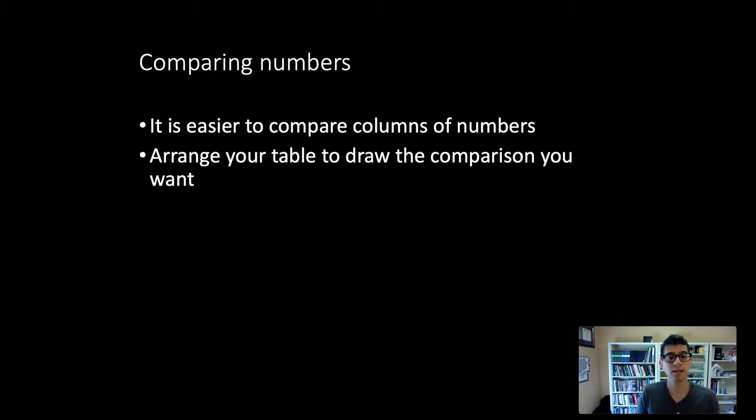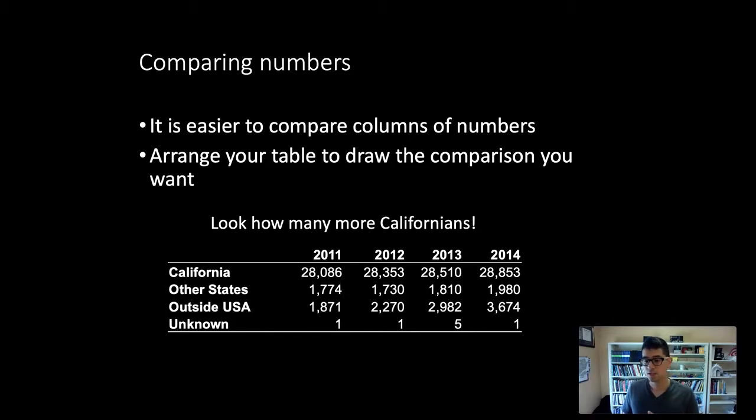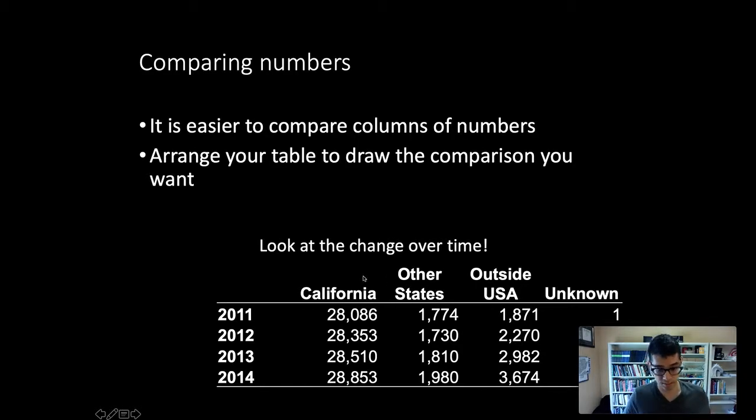When we're doing that, keep in mind that it's easier to compare columns of numbers than rows. Looking at data from the lab quizzes, if we've got a table arranged so that we've got the categories for type of student—a California student, a non-California resident student, a non-US resident, and an unknown residency status—we've got these categories down here and the rows as years.